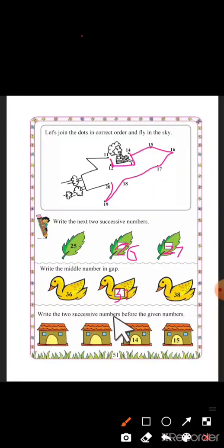Write the two successive numbers before the given numbers. There are four houses. Here number 14 is written, here 15 is written. Which two numbers will come before 14?